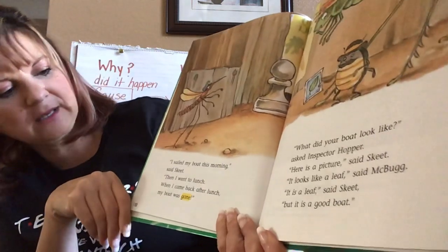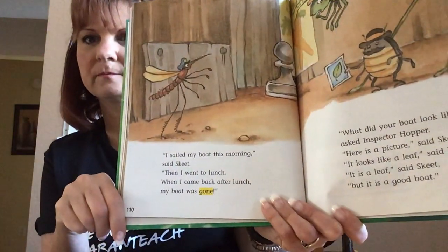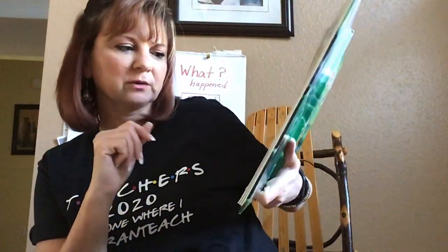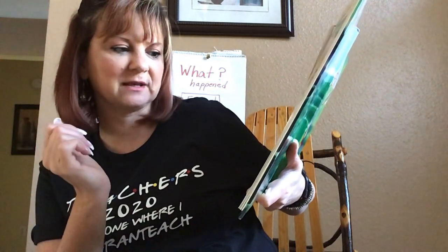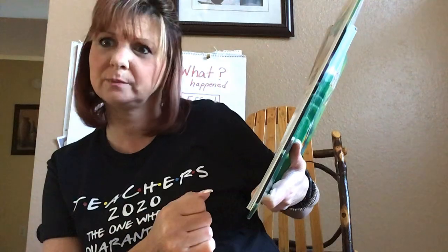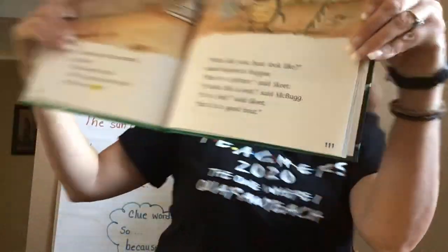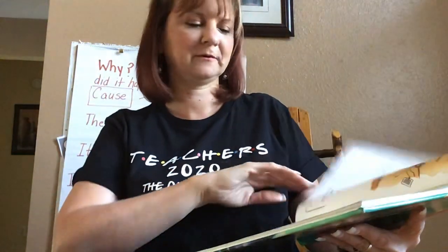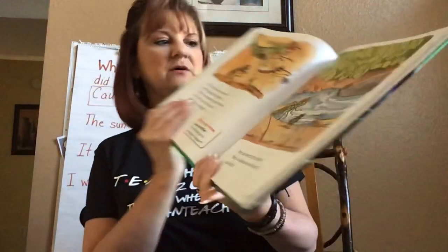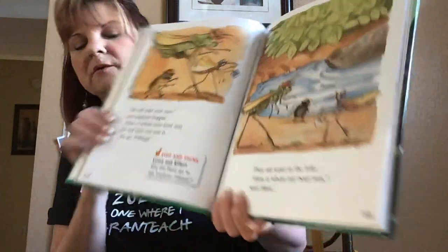'I sailed my boat this morning,' said Skeet. 'And then I went to lunch. And when I came back from lunch, my boat was gone.' 'What did your boat look like?' asked Inspector Hopper. 'Here's a picture,' said Skeet. 'It looks like a leaf,' said McBug. 'It is a leaf,' said Skeet, 'but it is a good boat.' So his boat is actually a leaf, because a leaf makes a very good boat for a mosquito. But it's still missing. 'We will take your case,' said Inspector Hopper. 'Show us where your boat was the last time you saw it.' That's a good place to start — you have to look at where you saw the boat last.